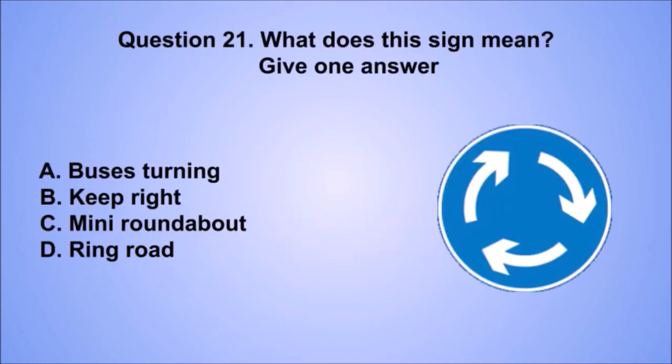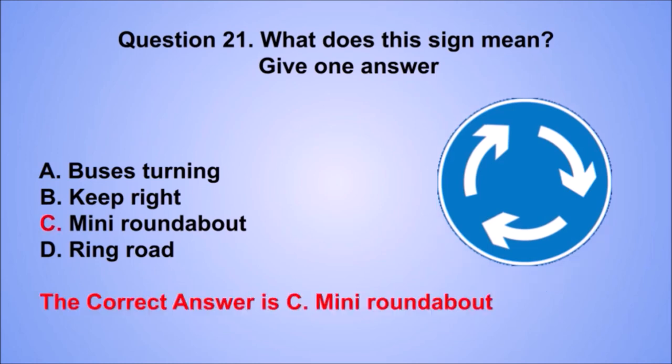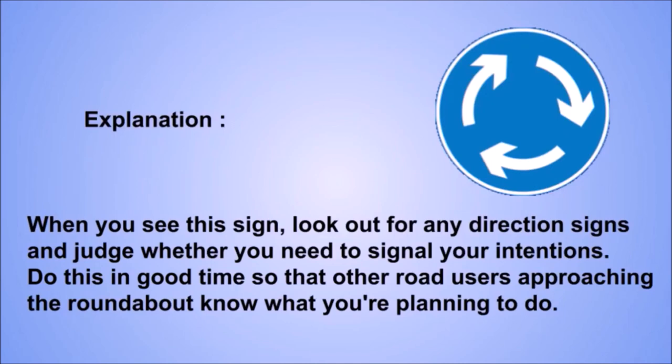Question 21. What does this sign mean? The correct answer is C: Mini roundabout. When you see this sign, look out for any direction signs and judge whether you need to signal your intentions. Do this in good time so that other road users approaching the roundabout know what you're planning to do.